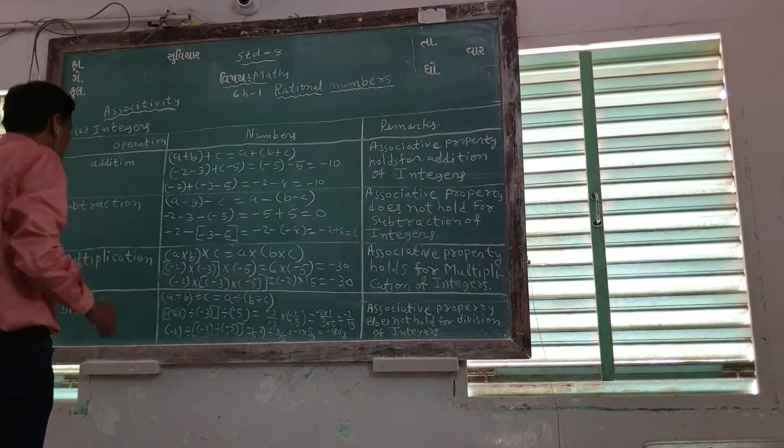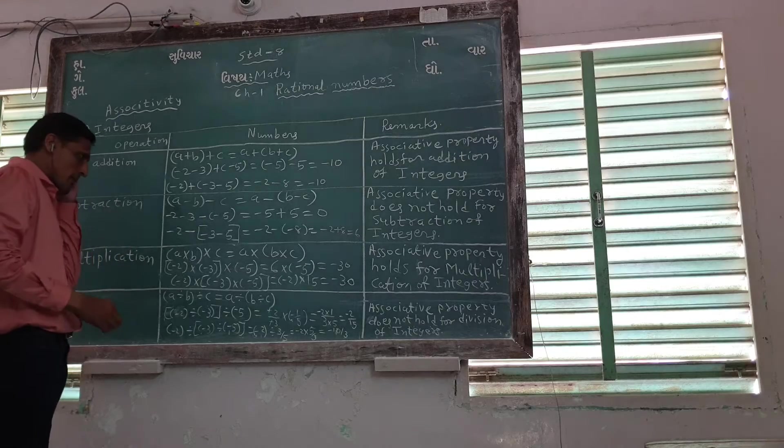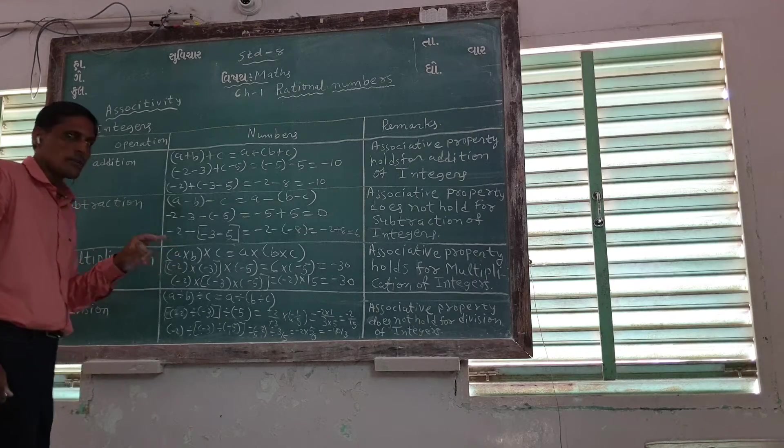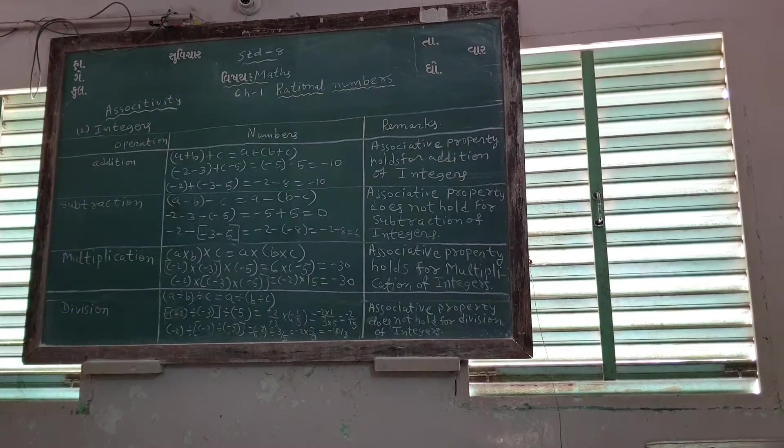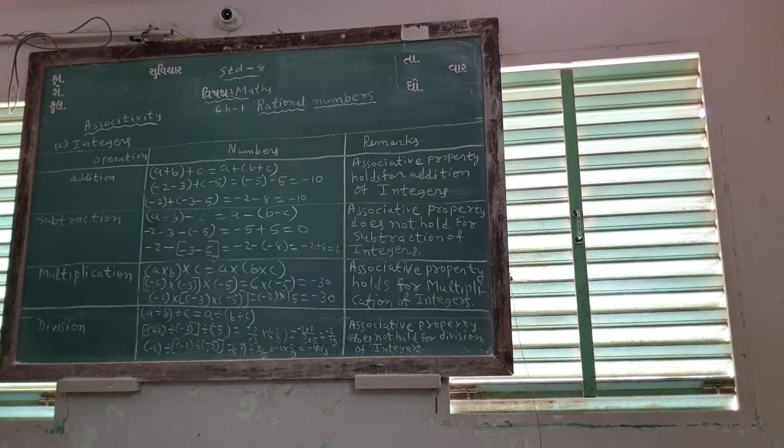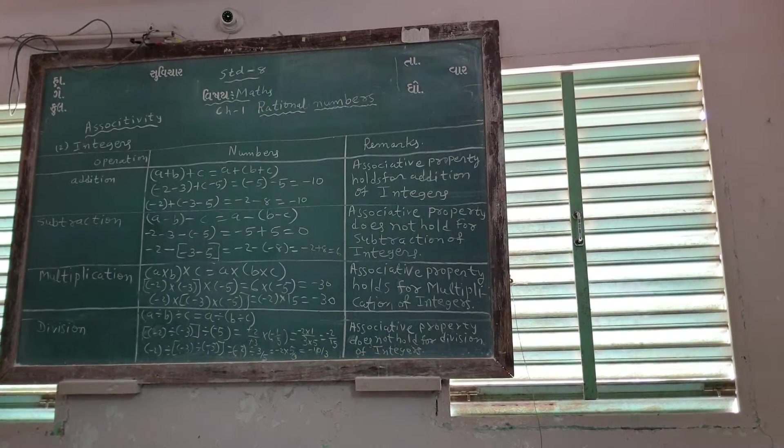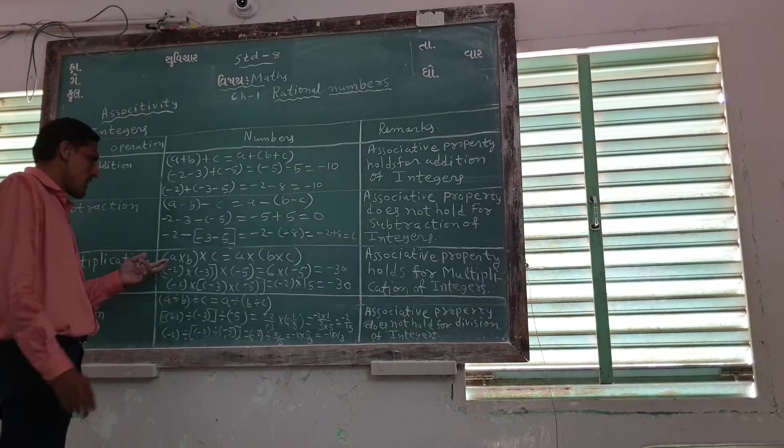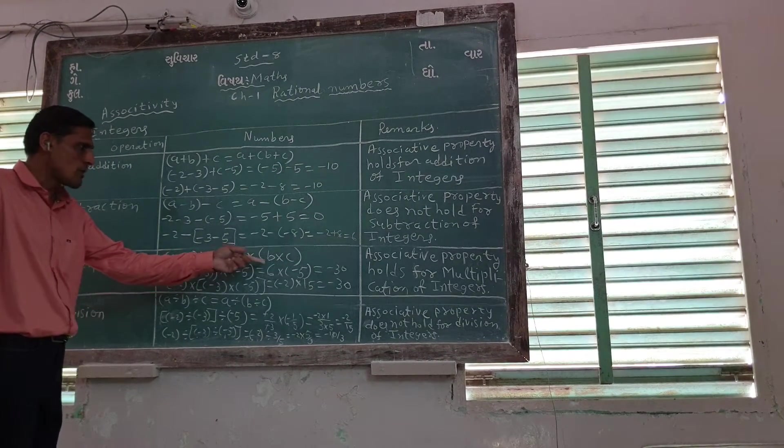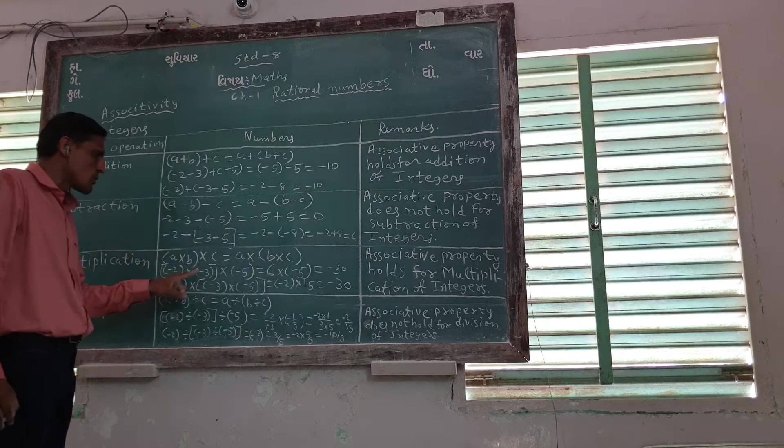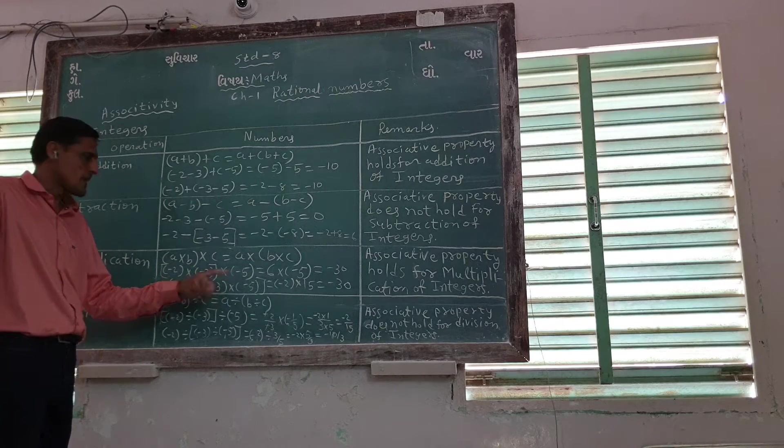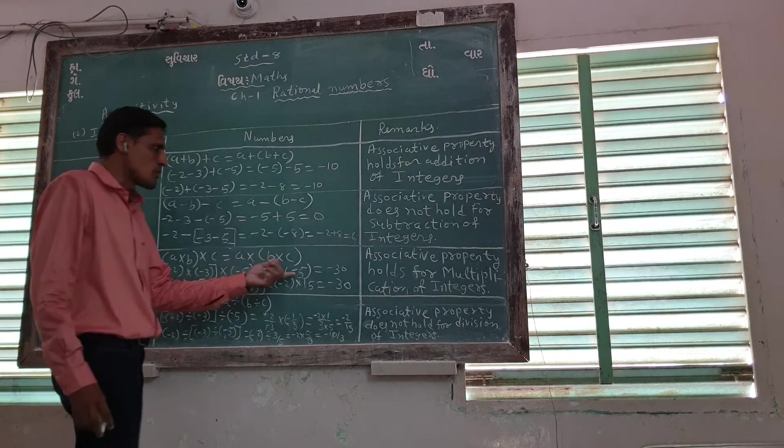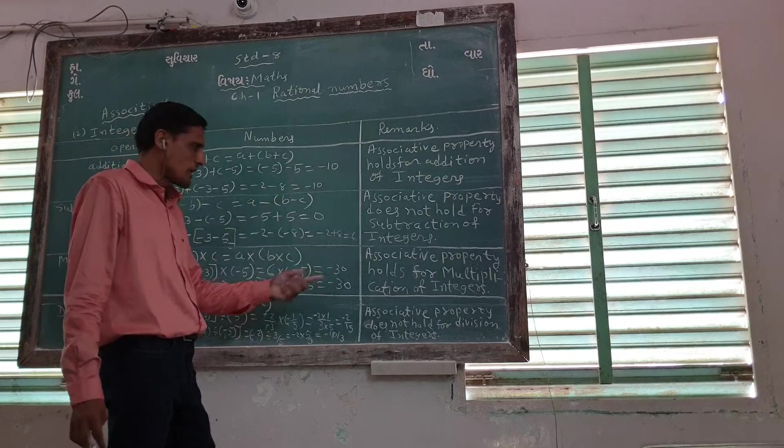So we have multiplication here. A cross E cross E, A cross E cross C. So minus 2 into minus A, multiply minus 5, 6 into minus 5, so minus 13.